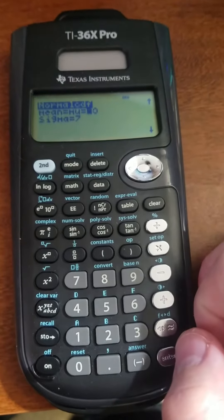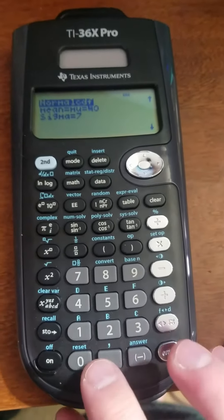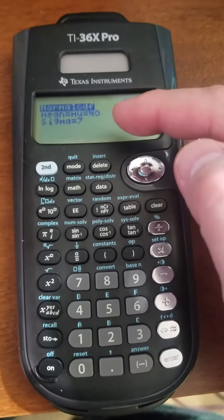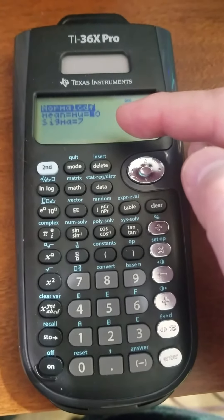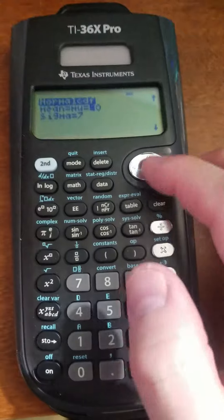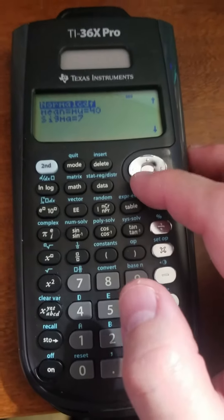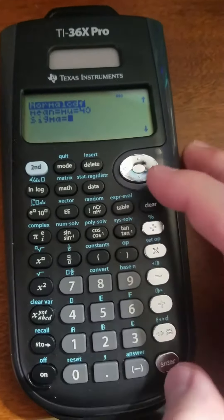When entering normal CDF, we'll enter the mean and the standard deviation. It calls it mean, which is mu. In this case, I'll use 40 as my mean, and a standard deviation, which is what sigma represents.